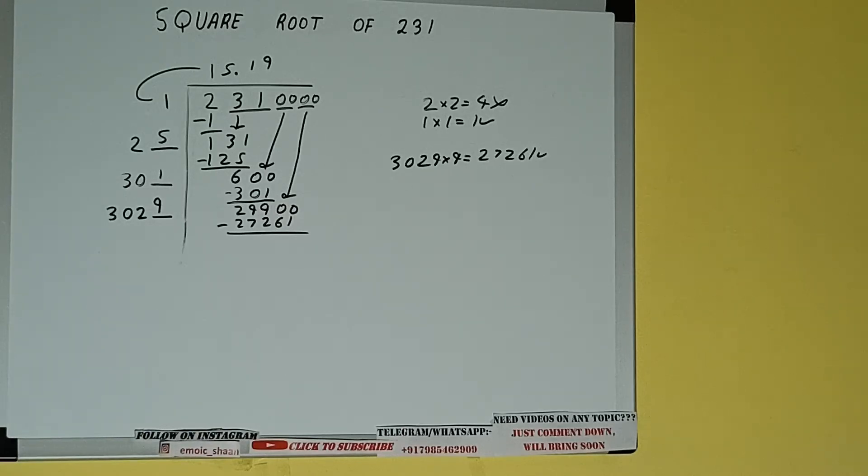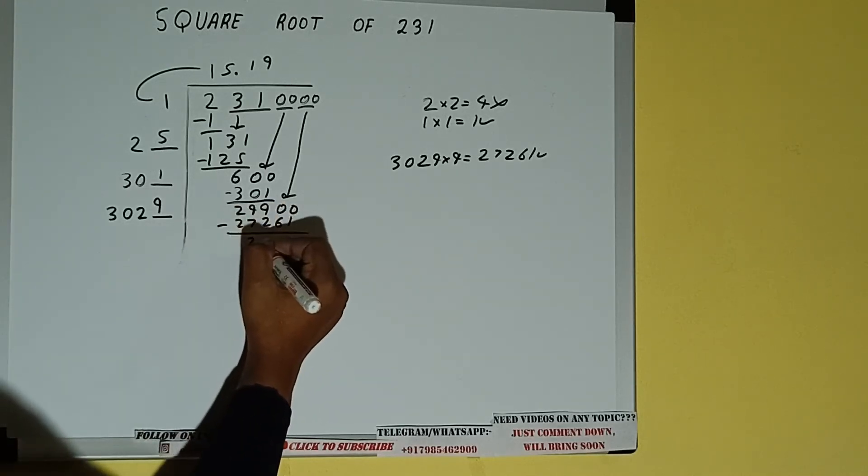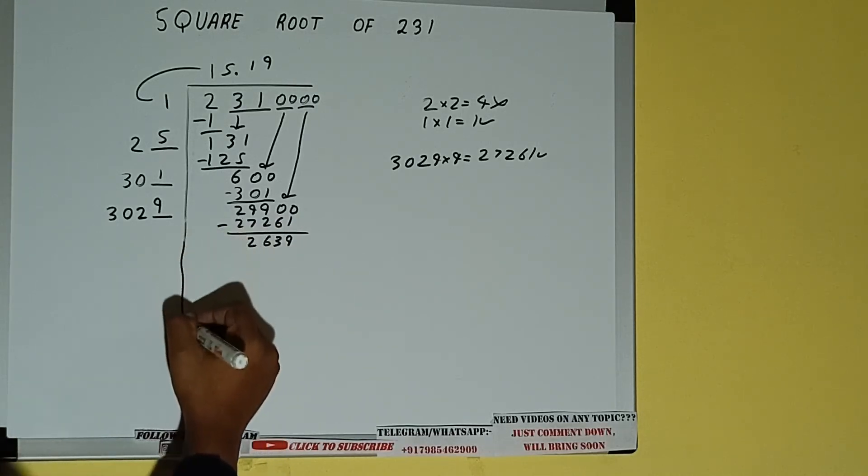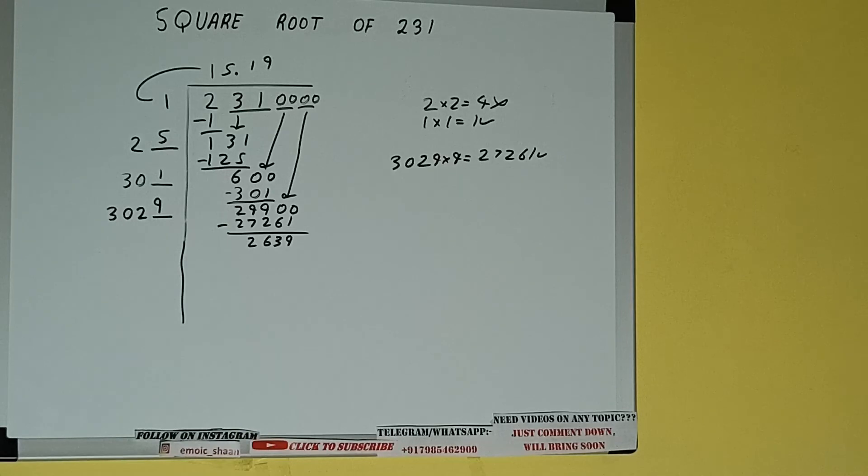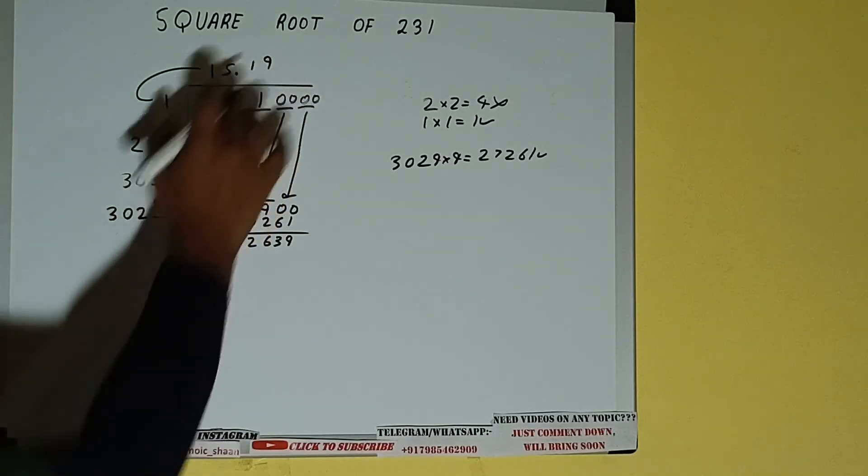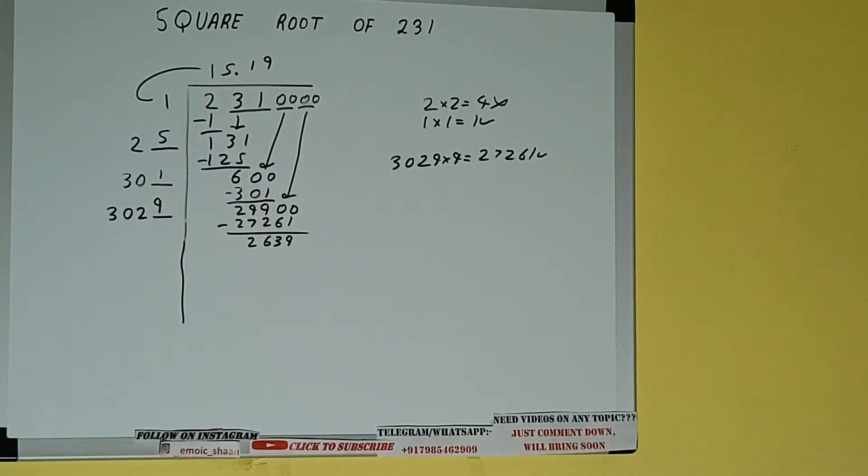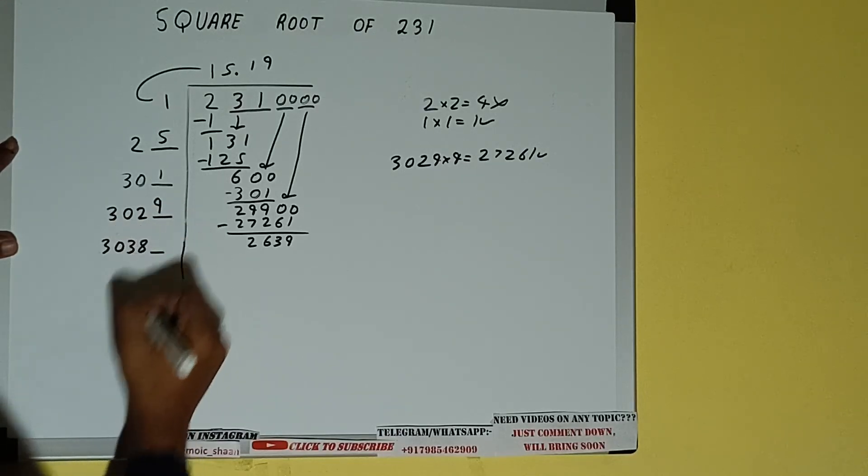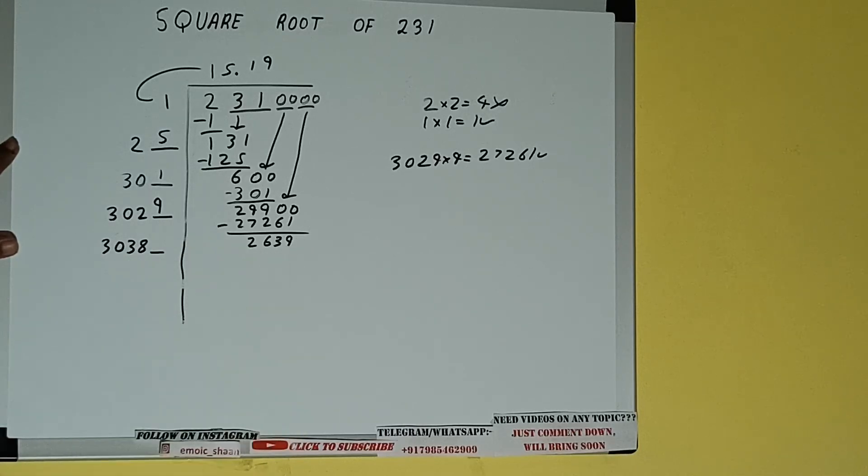And we'll be left with 2,639, which is good to take. Sorry, we just got to write 3029 into 9 we did, so add both. So 3029 plus 9 will be 3038 and one digit extra. And this number we need to make it big.